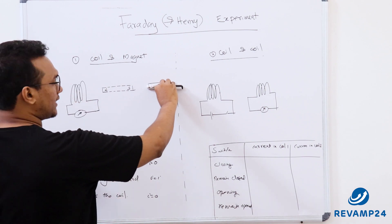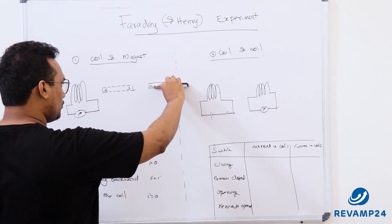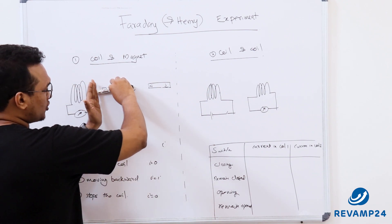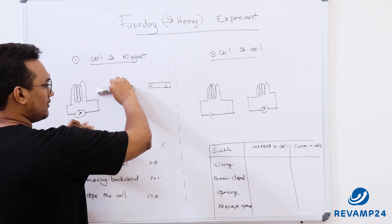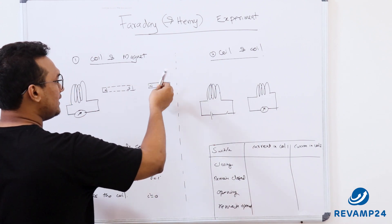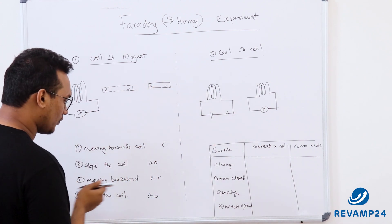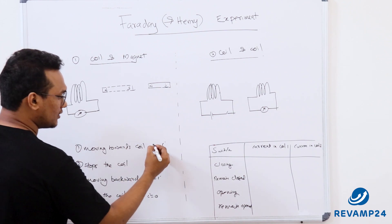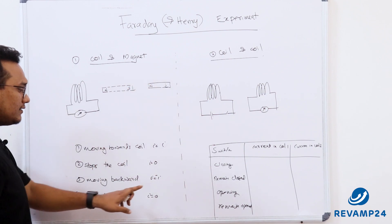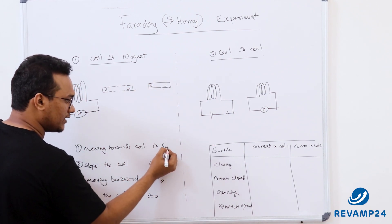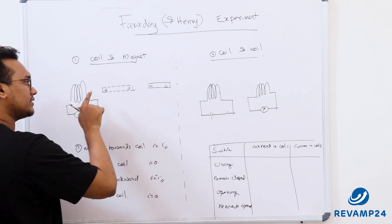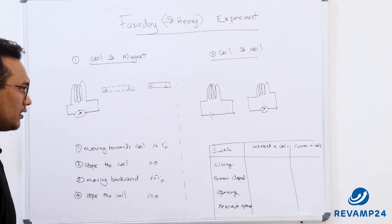When the magnet was stationary, current was zero. Moving it toward the coil produced a deflection. Stopping at one position gave zero deflection again. Moving it away gave a deflection, but in the opposite direction — current was equal to -i. So current flows in one direction when moving toward the coil, and in the opposite direction when moving away.